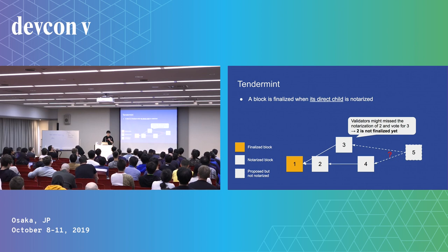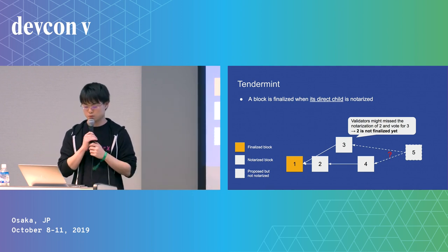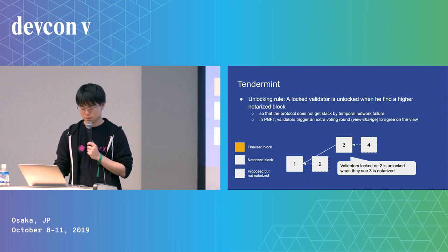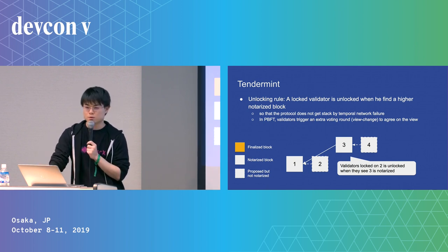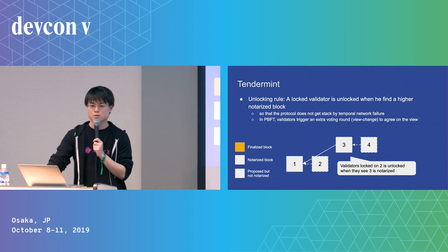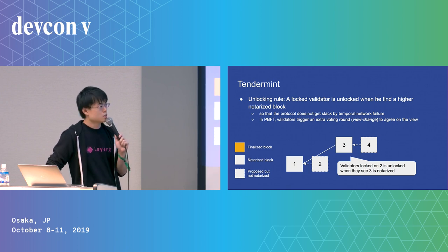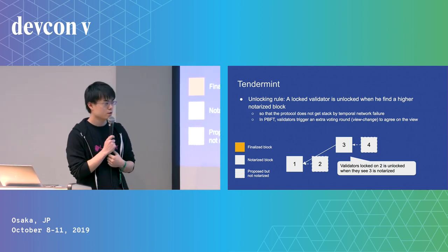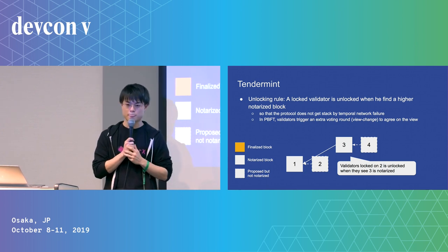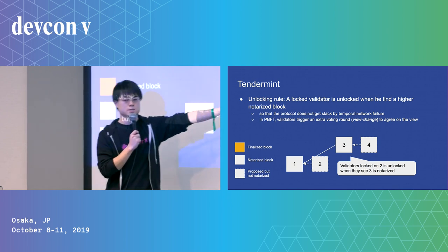Finality comes only when its direct child block is notarized because there might be another block in the middle. Locking is necessary for safety, but if locking is too strong, it prevents liveness. So we have an unlocking condition. In Tendermint, a validator locked on a block is unlocked when it sees a higher notarized block.